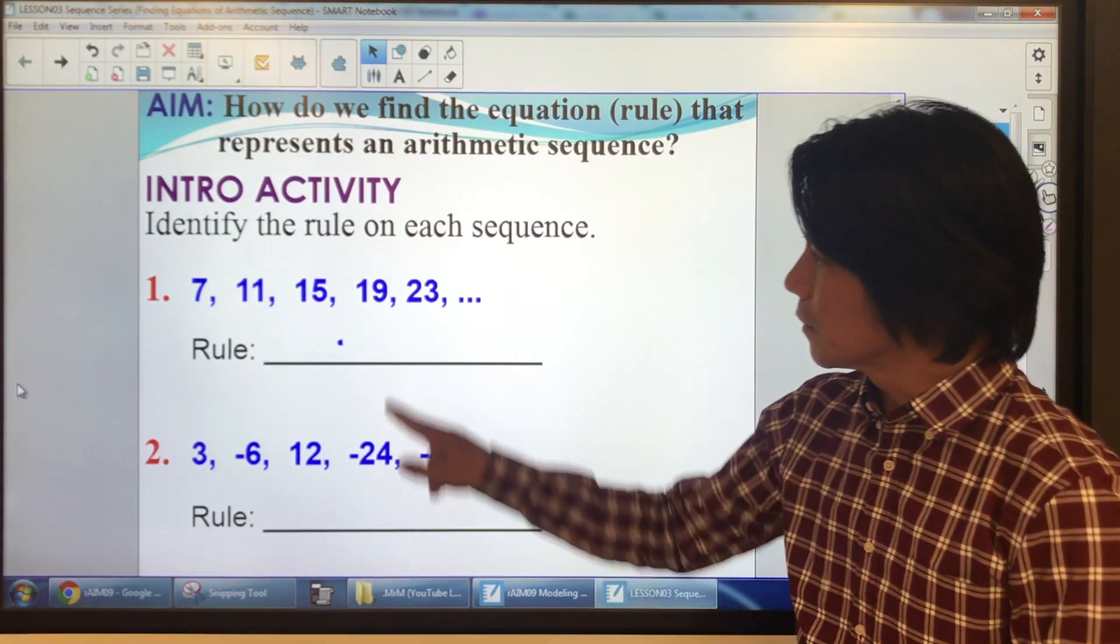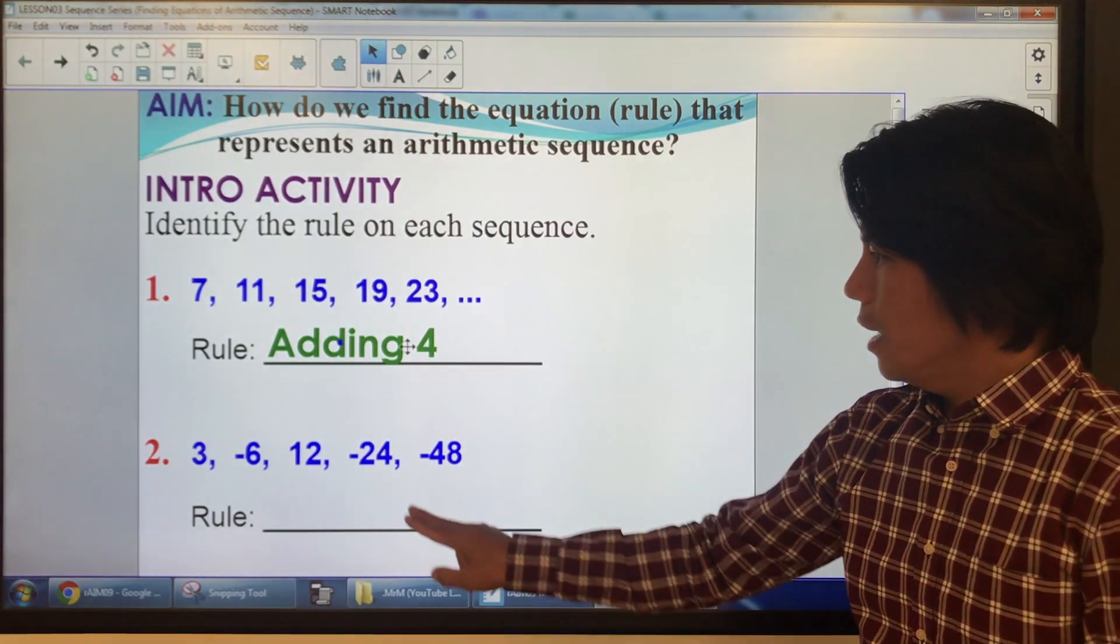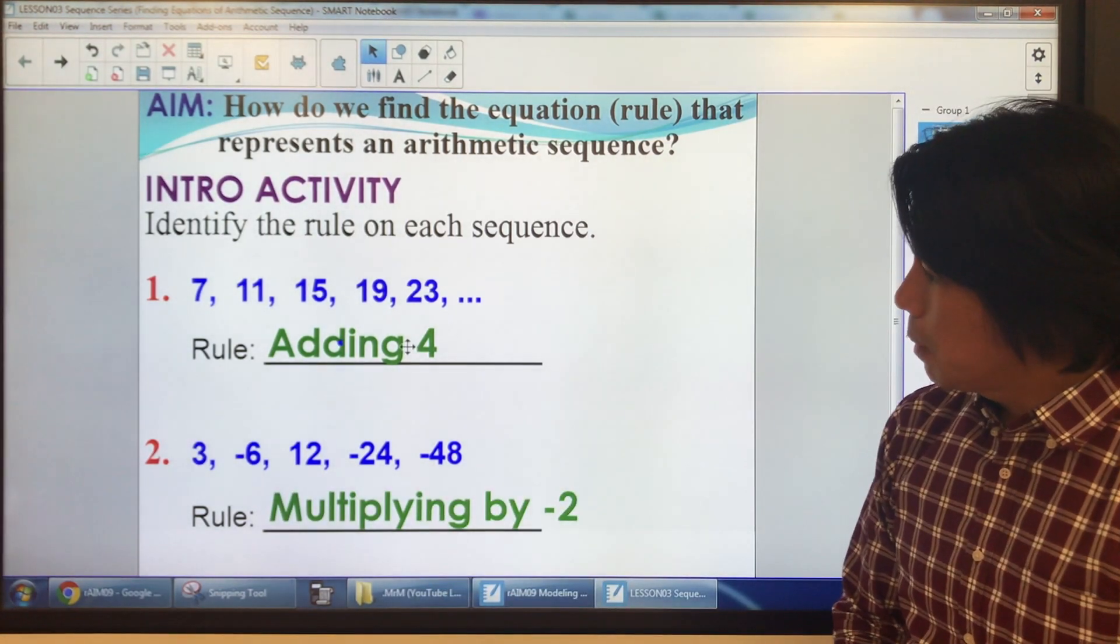Alright, let's take a look. The answer to this is adding 4, and this is multiplying by negative 2.